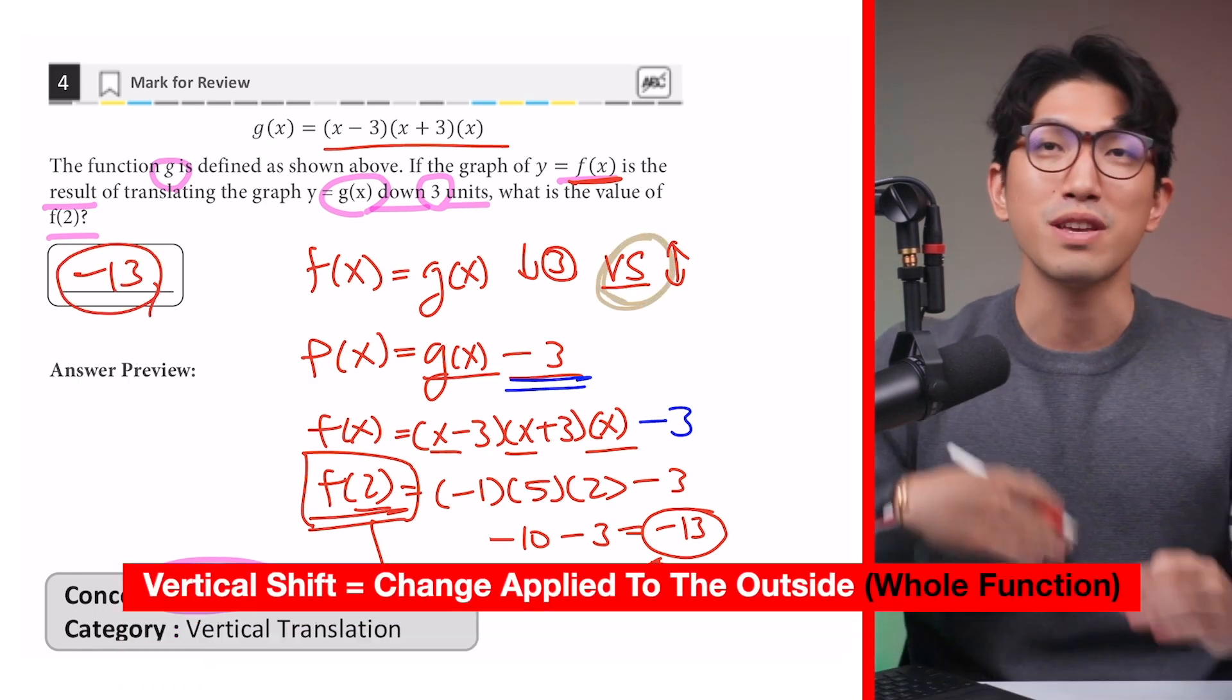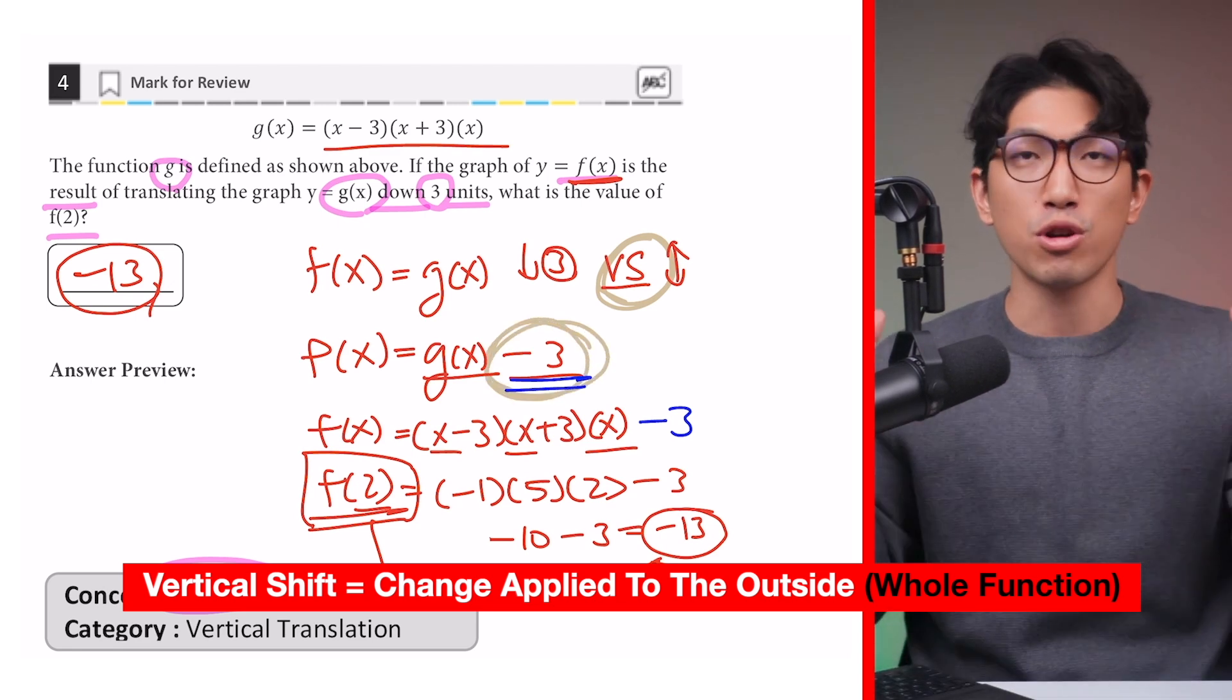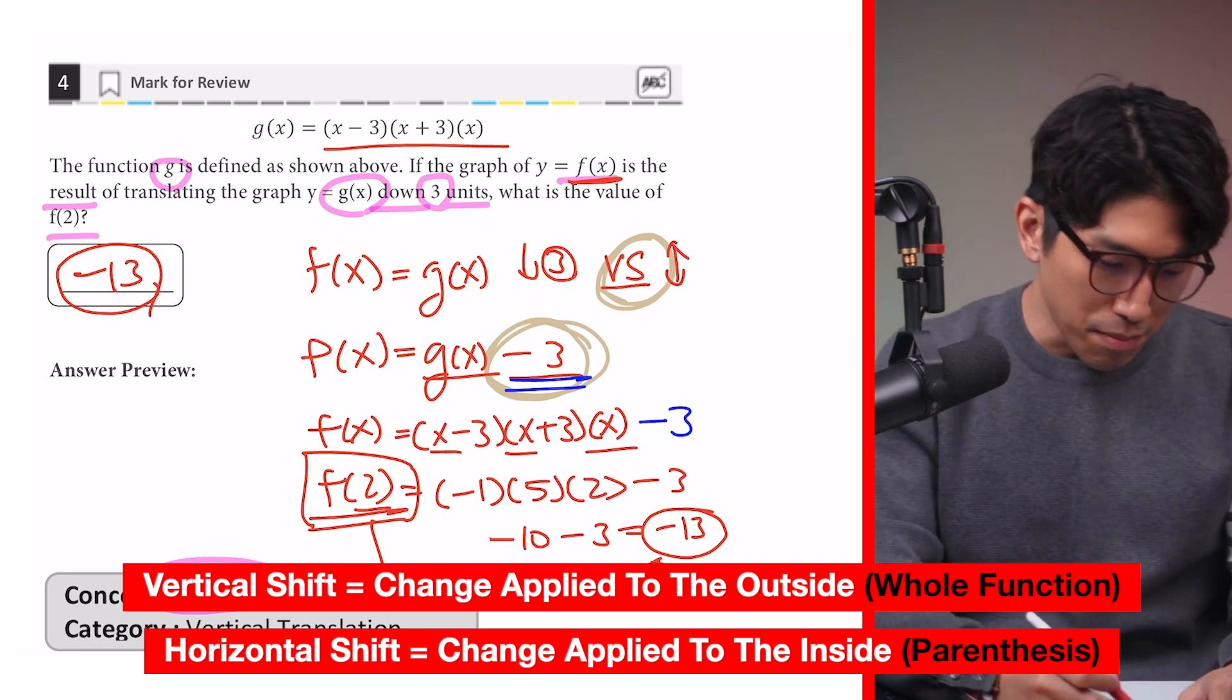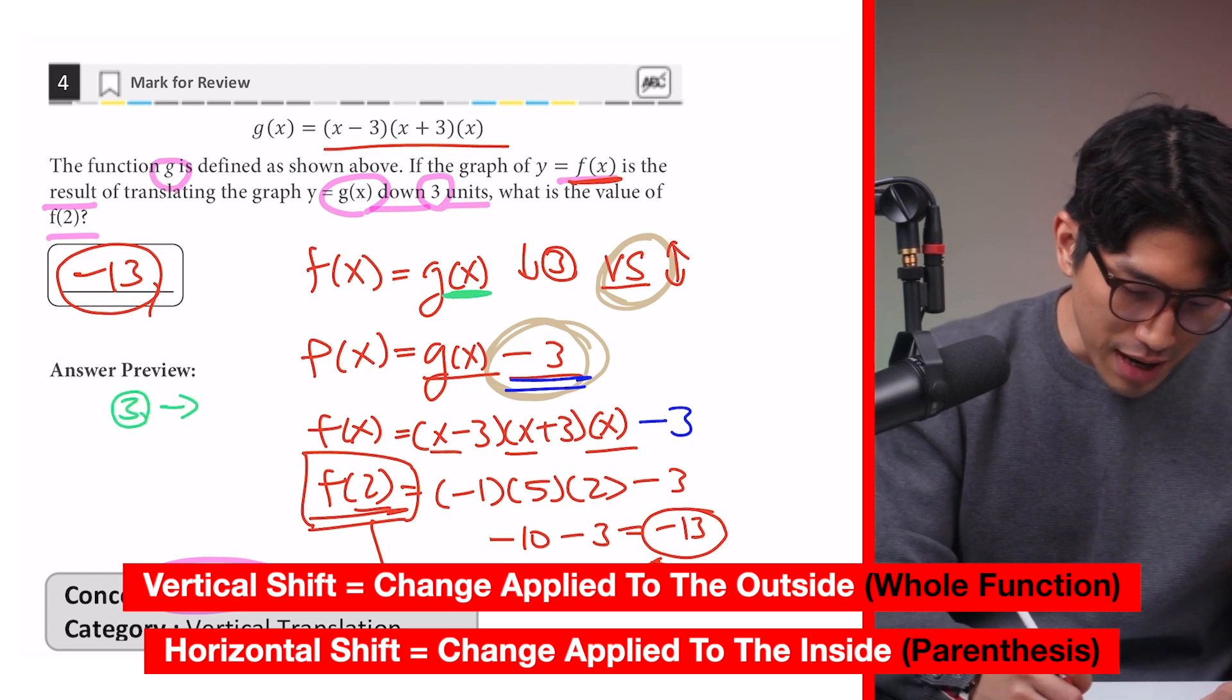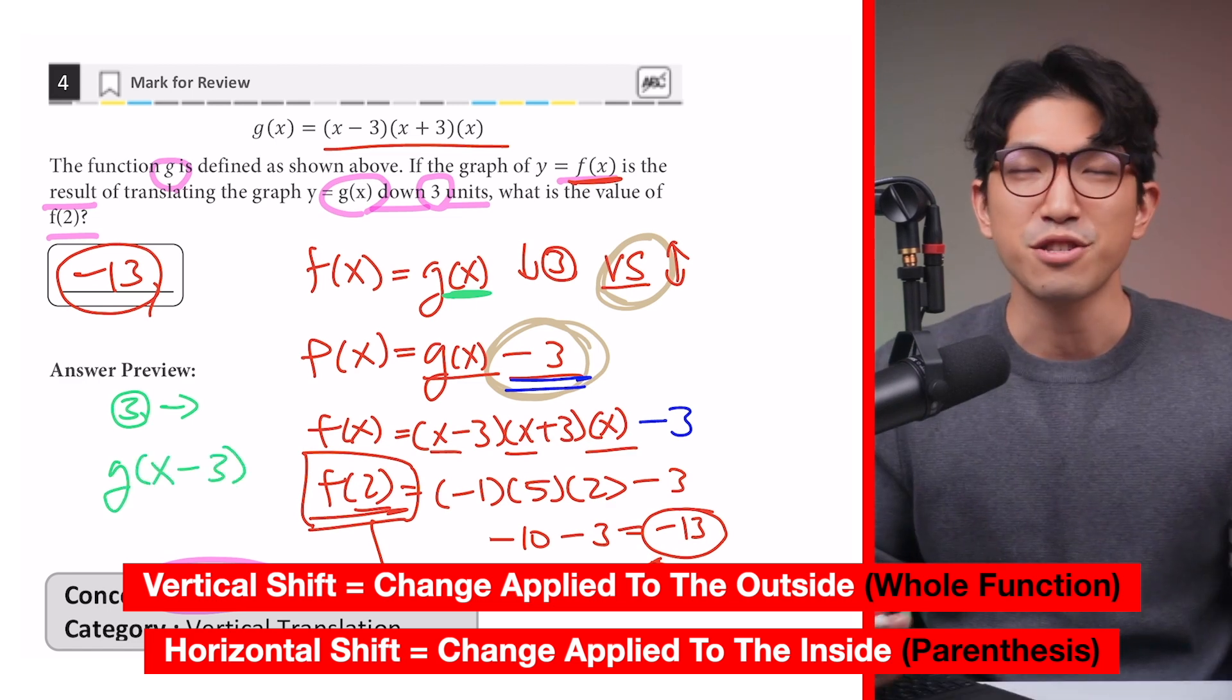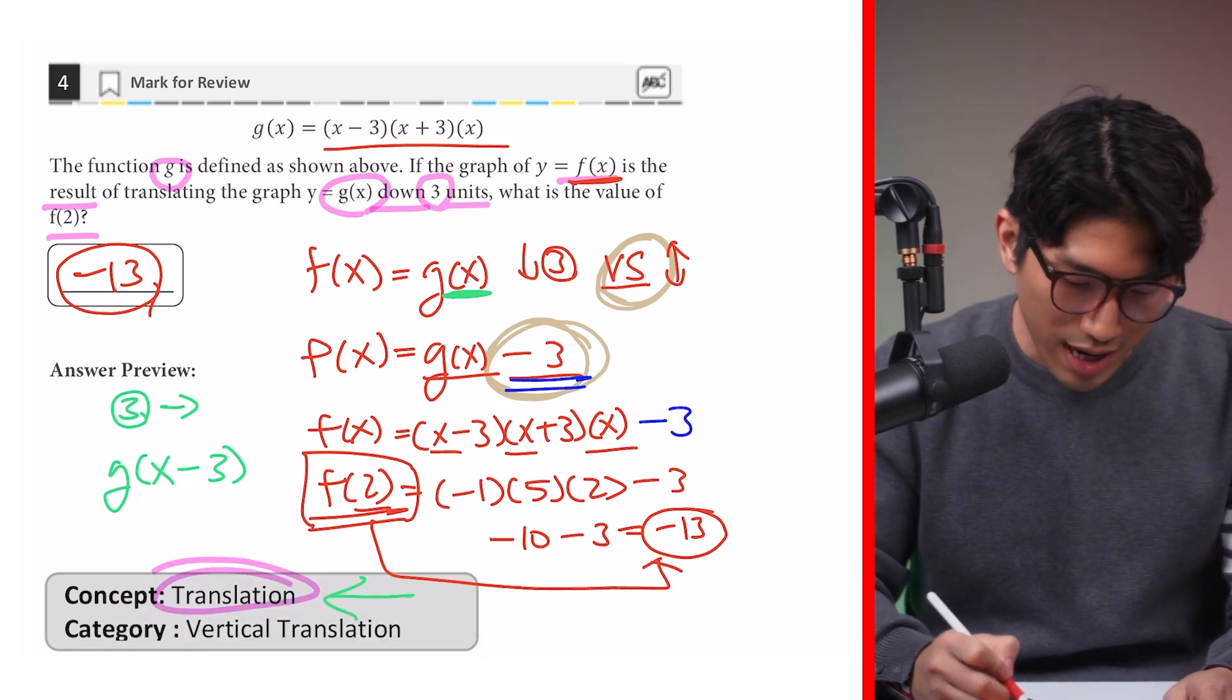So for the vertical shift, where you move the graphs up or down, you're going to have to apply the changes to the outside of the function. But when it comes to horizontal shift, where you're moving the graphs left or right, you're going to have to apply the changes to the inside of the function right there. So for example, if it's 3 units to the right, it's going to look something like g of x minus 3. So that's just a quick summary, but a detailed summary of translation on everything you need to know for the digital SAT is going to be linked right here. And now, the third and the last question will be on triangles.